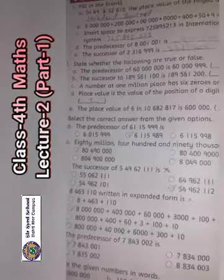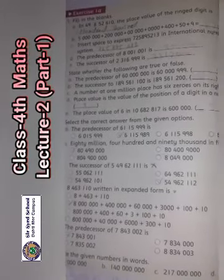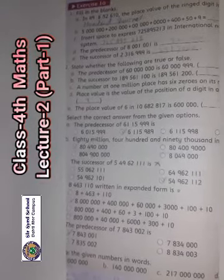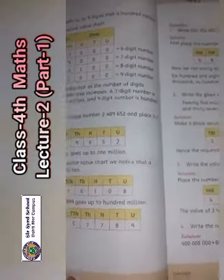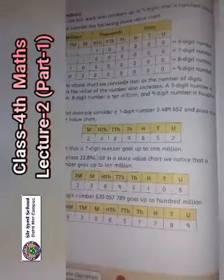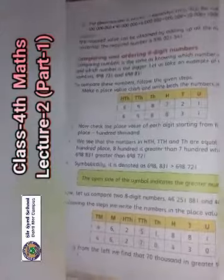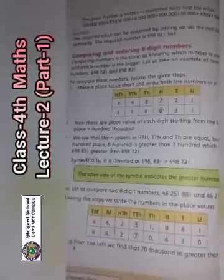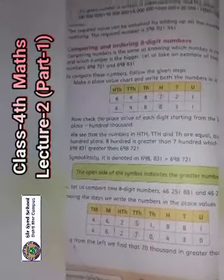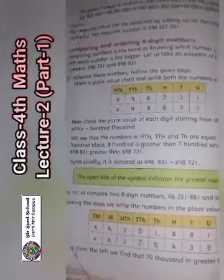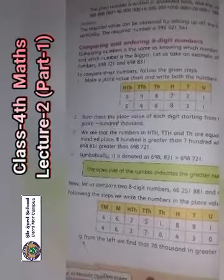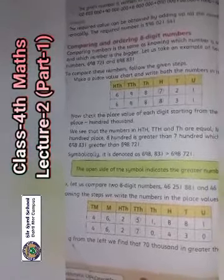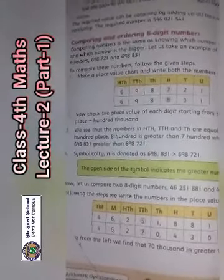Please open page number 6, which has Exercise 1A. In the last lecture, you were given deductions of this exercise on pages 2, 3, 4, 5, and 6. In the previous lecture, you studied the value chart and practiced it. After that, we practiced comparing and ordering numbers up to six and eight digits. We also covered ascending, descending order, and the arrangement of greater and less values.